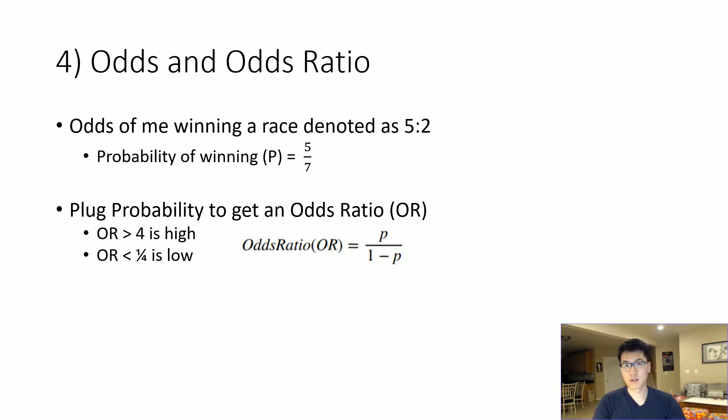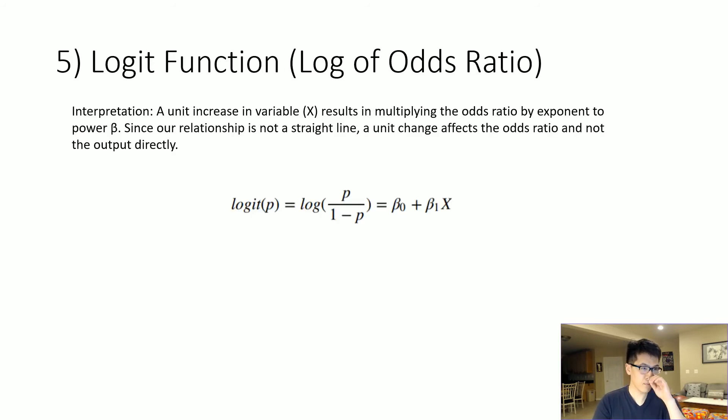So the odds ratio - we'll be using the odds ratio further down the road. Essentially if our odds ratio is greater than four, it's really high. If it's lower than one-fourth, then it's pretty low in terms of that outcome happening.